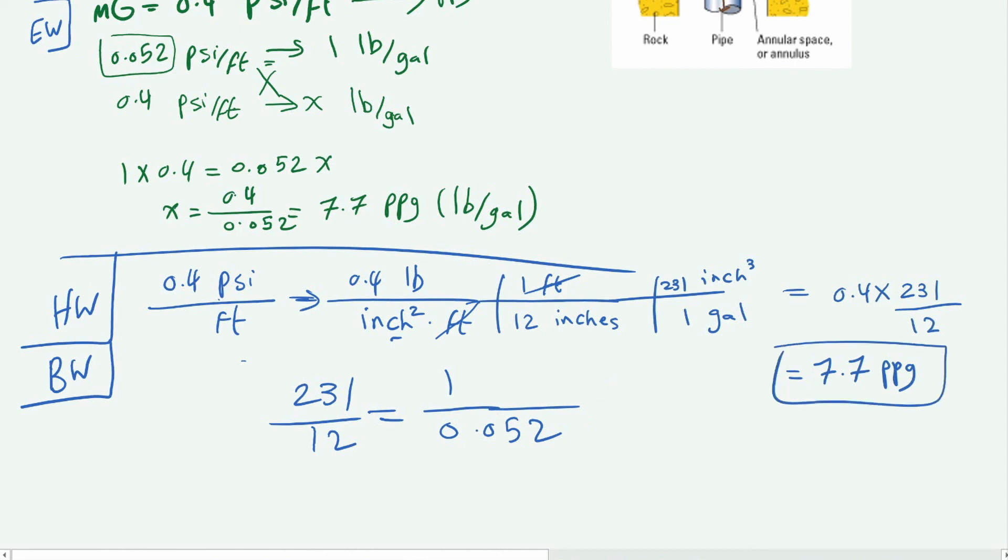The 7.7 pounds per gallon is the same as the 7.7 pounds per gallon that we found over 0.052. It's the same as multiplied by 231 over 12, because 231 over 12 is equal to 19.25, and if you do one over that you will get your 0.0519.